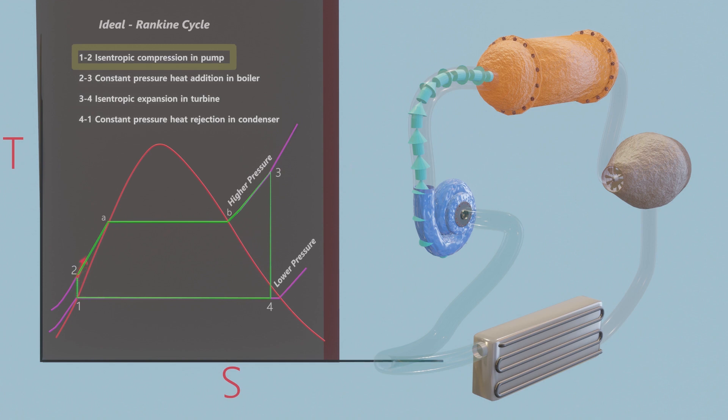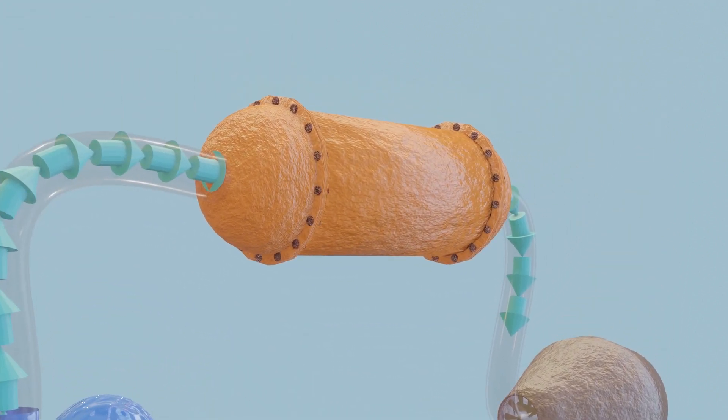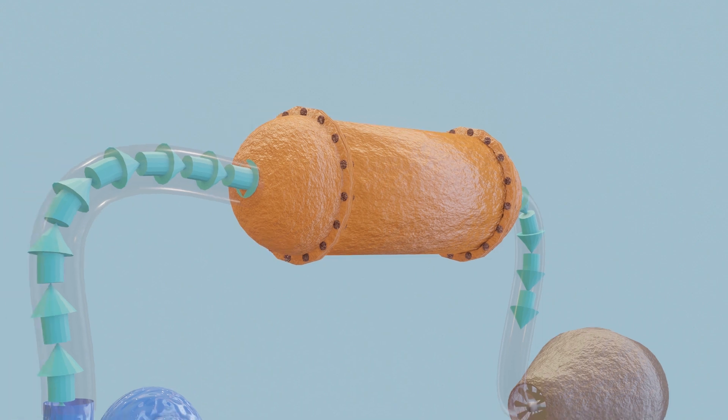Water enters the boiler as a compressed liquid at state 2 and leaves as a superheated vapor at state 3. The boiler is basically a large heat exchanger where the heat originating from combustion gases, nuclear reactors, or other sources is transferred to the water essentially at constant pressure.